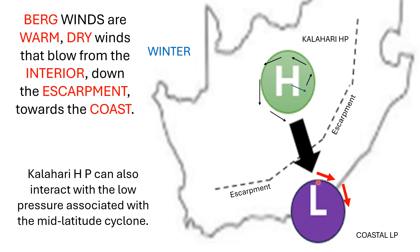And by the time it reaches the coastline, it is experienced as a hot, dry wind. It is dry because it originates over the interior of the country where there is very little water to evaporate. And it is warm because it descends down the mountain towards the coastline.